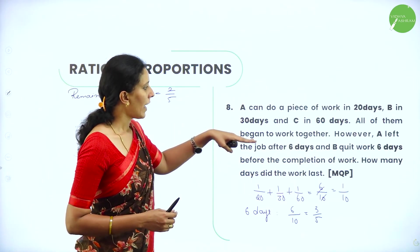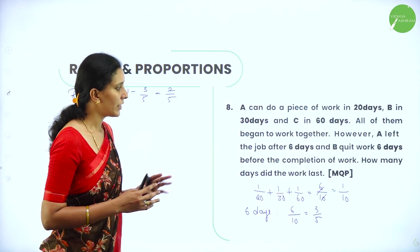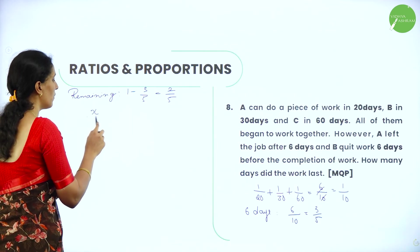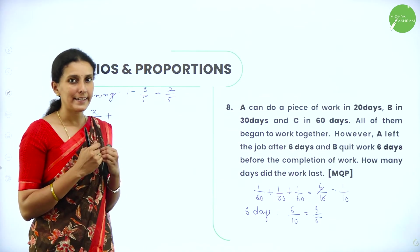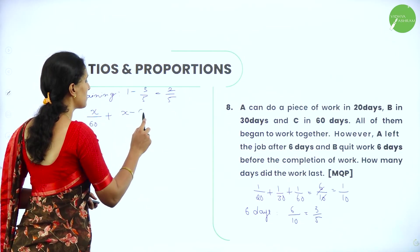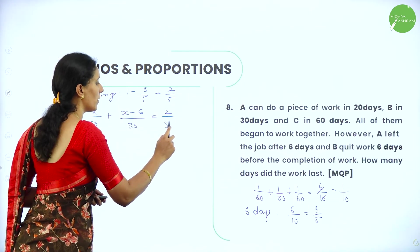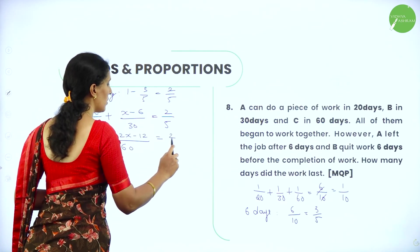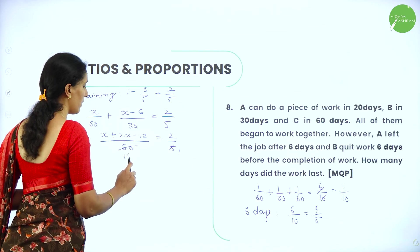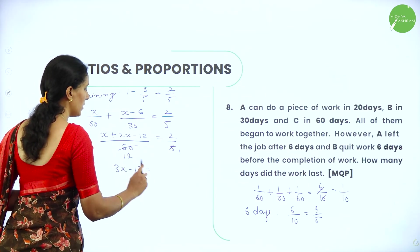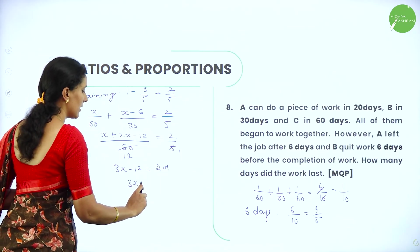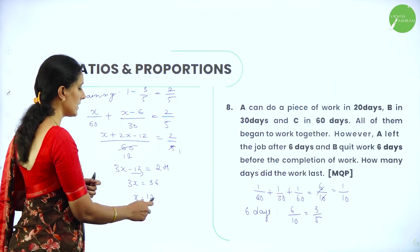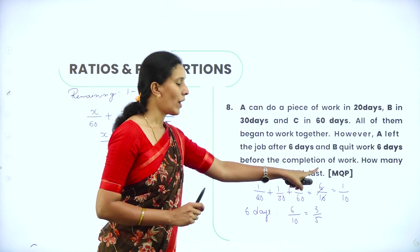After 6 days, A left, and B quit 6 days before completion, so only C works to the end. Let the remaining days be x. C completes 1 by 60 per day and B works x minus 6 days doing 1 by 30 per day for the remaining 2 by 5 work. Taking LCM as 60: x by 60 plus 2(x minus 6) by 60 equals 2 by 5, giving 3x minus 12 equals 24, so 3x equals 36, and x equals 12. Hence the remaining work lasts 12 days.